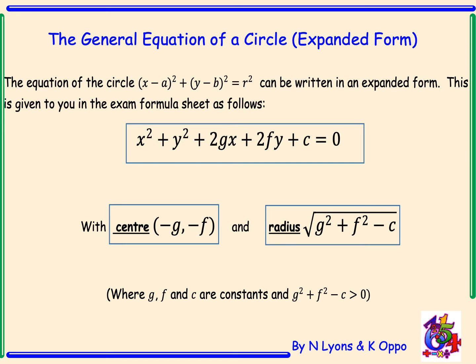The general equation of a circle in its expanded form is given to you in the exam formula sheet as x squared plus y squared plus 2gx plus 2fy plus c equals 0. To find the centre from the expanded form, you look at the coefficient of x for your x coordinate and the coefficient of y for your y coordinate. So the centre is given as negative g and negative f.